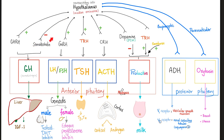Somatostatin is a universal inhibitor — it inhibits everything. In this situation it's inhibiting the release of growth hormone from the anterior pituitary. The anterior pituitary secretes all of the following: growth hormone, LH and FSH (known as the gonadotropins), TSH (the thyrotropin), ACTH (the adrenocorticotropin), as well as prolactin.